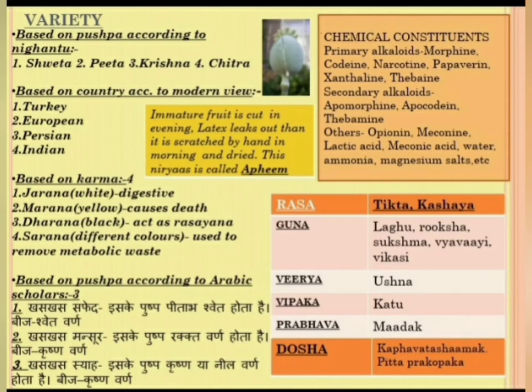Its rasa (taste) is Tikta and Kashaaya. Based on rasa and Upvisha properties, its gunas are Laghu, Ruksha, Sukshma, Vyavayi, and Vikasi. Virya is Ushna, Vipaka is Katu, Prabhava is Mada. The dosha effect is Kapha-Vata shamak and Pitta prakshobhak.